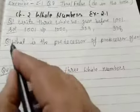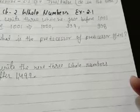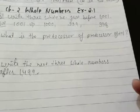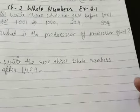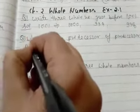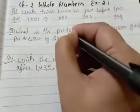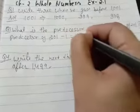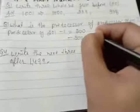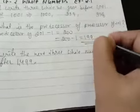Now, coming to question number 3: what is the predecessor of the predecessor of 201? We have to find out the predecessor of 201, then find out again the predecessor of that number. Predecessor of 201 is 200. Again, predecessor of 200 is 199. So this is the answer.